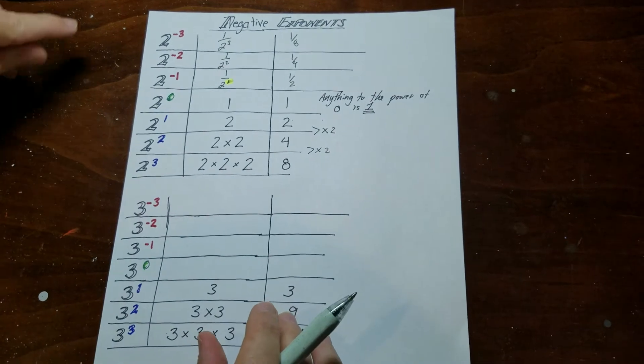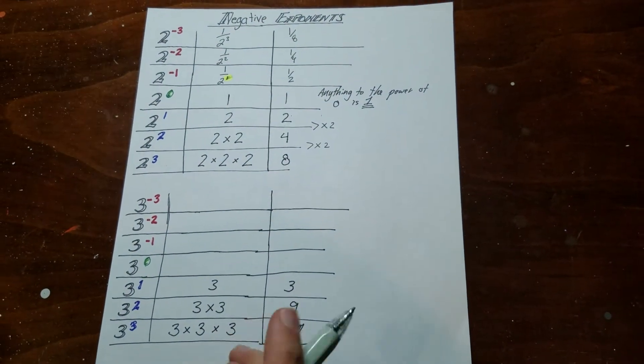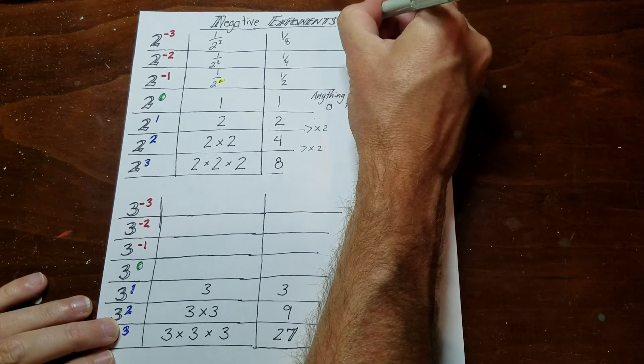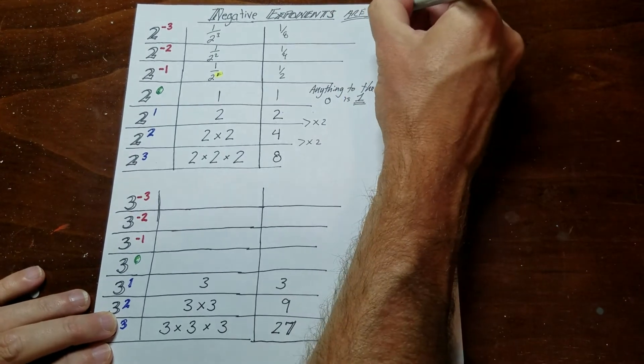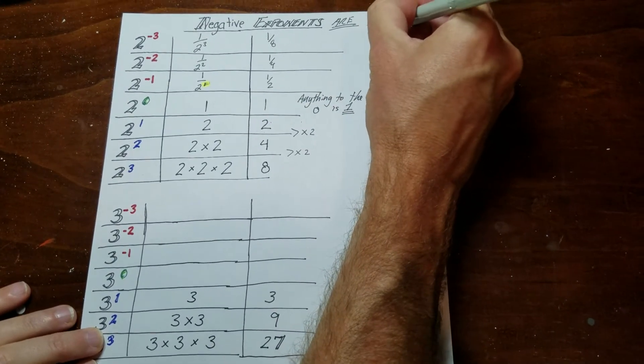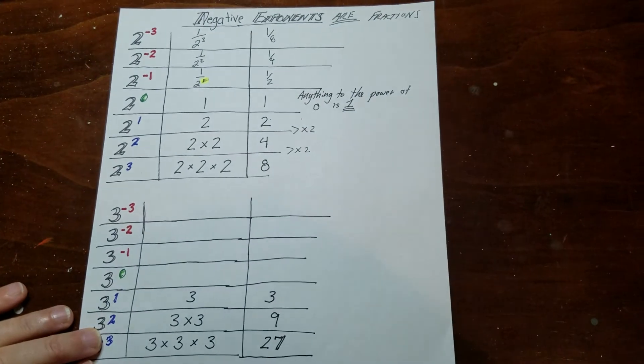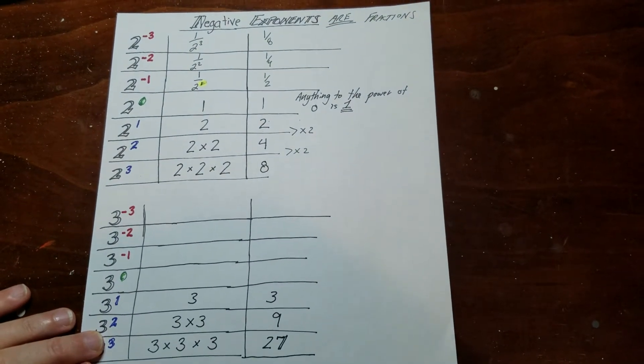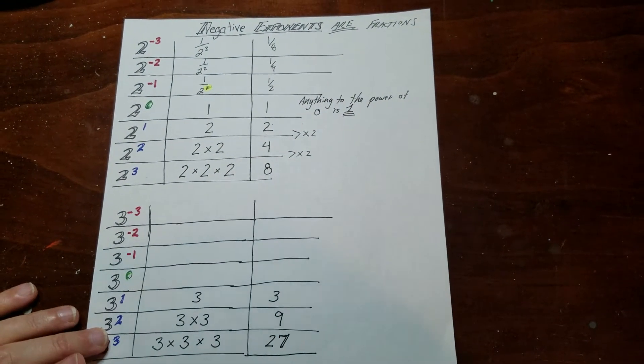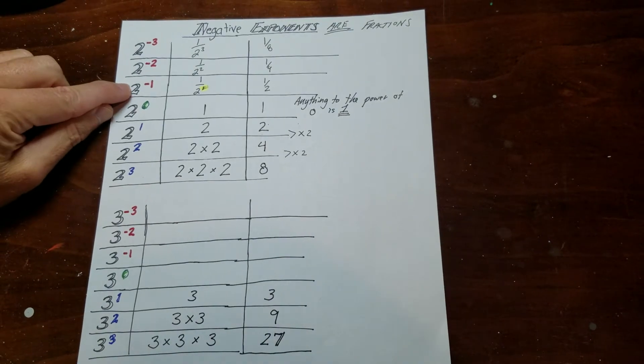So what a negative exponent means is negative exponents are fractions. It has nothing to do with the outcome being negative or positive. It just means it's another way of writing a fraction. It's actually the inverse.